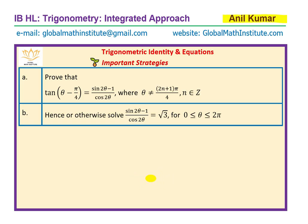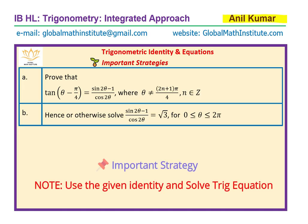Sometimes students get stuck with Part A and are unable to prove the trigonometric identity. The idea here is: even if you are unable to do Part A, you can still do Part B using the identity and get four marks. So let us begin by solving Part B first — that is a non-traditional approach but very effective for the test paper.